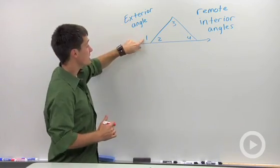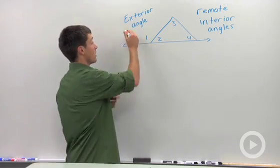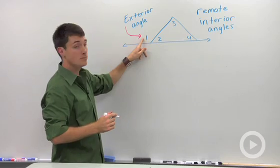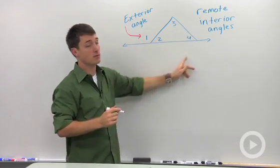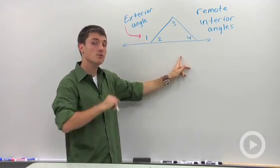Exterior means outside. So this is angle one outside of our triangle. The angles that are inside the triangle are the interior, but there's only two that are remote.